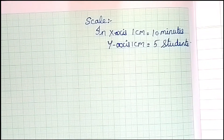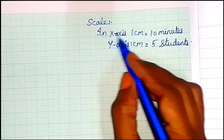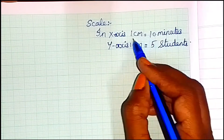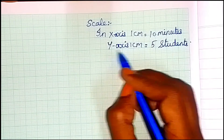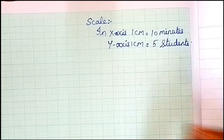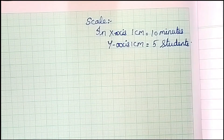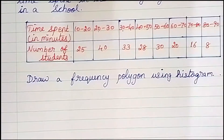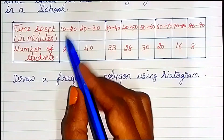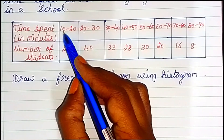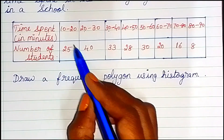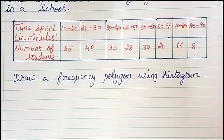The scale on the x-axis: 1 cm is equal to 10 minutes. Next, y-axis: 1 cm is equal to 5 students. First, for the histogram, from 10 to 20 there are 25 students — so we go up to the maximum.